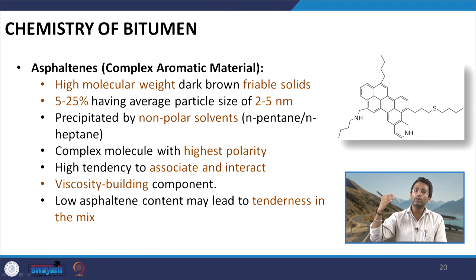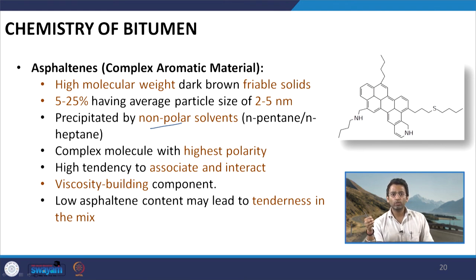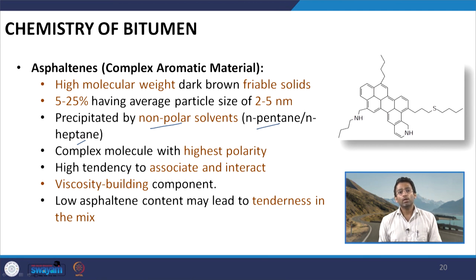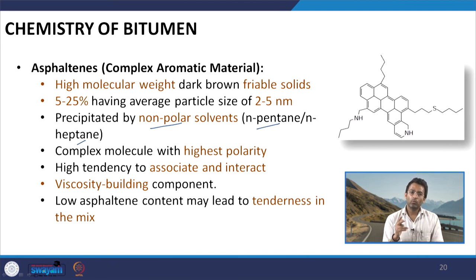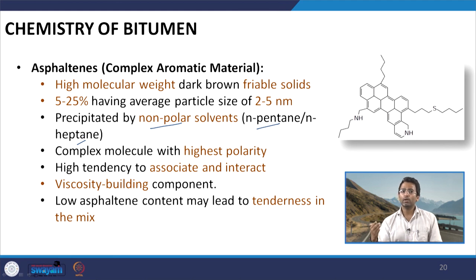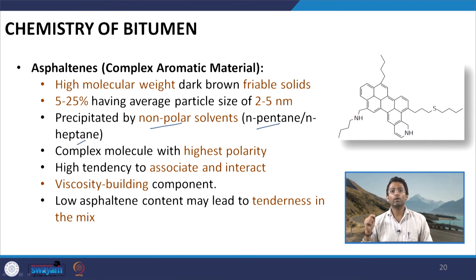Asphaltenes can be separated from the bitumen system using non-polar solvents. They can be precipitated using non-polar solvents because they do not dissolve in them. Two popular non-polar solvents used are n-pentane and n-heptane. Here it is very interesting to note that even with these two different solvents for the same bitumen, we can get different amounts of asphaltenes. More are the number of carbon atoms, less will be the precipitation. Therefore, n-pentane will give a higher yield of asphaltene from the same bitumen in comparison to n-heptane.